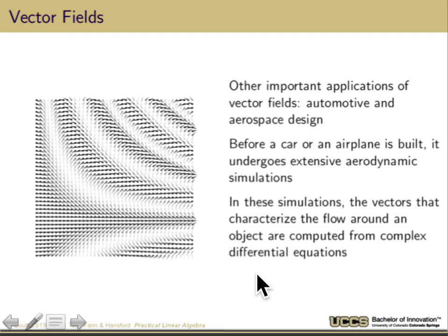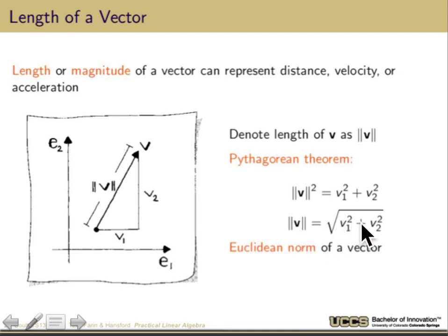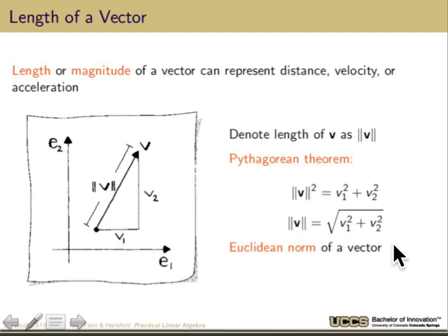I've talked about the length or magnitude of a vector a couple of times — let's be precise and define it. The length or magnitude of a vector can represent distance, velocity, acceleration, or whatever else we want in that space. We take the Euclidean length: v1 squared plus v2 squared gives us the square of the distance, so the actual length or magnitude is the square root of v1 squared plus v2 squared. We call that the Euclidean norm. Because the vector is position-independent, the norm doesn't care where we put the vector in space.